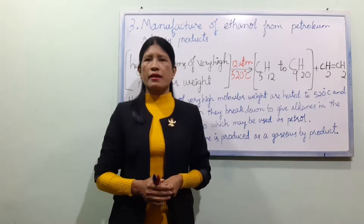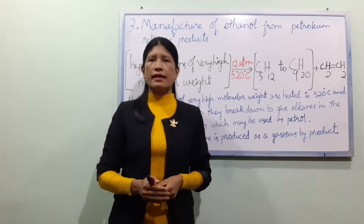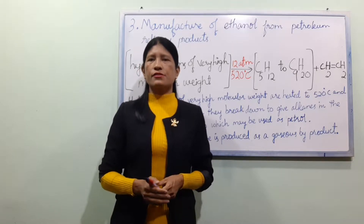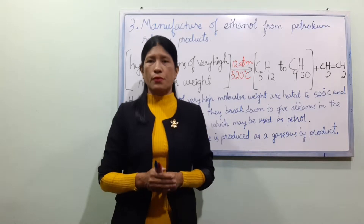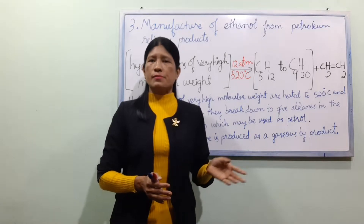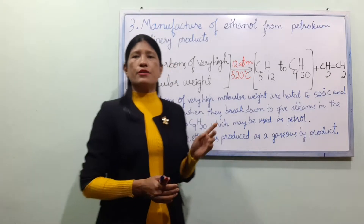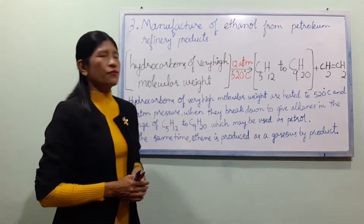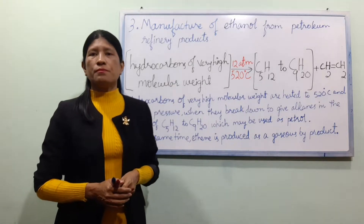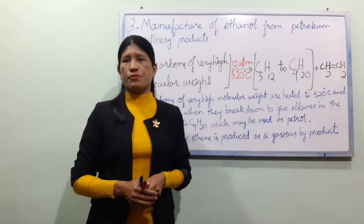We are going to cover: number one, hydrolysis of alkenes; number two, hydrolysis of alkyl hydrogen sulfate; and number three, manufacture of ethanol from petroleum refinery products.